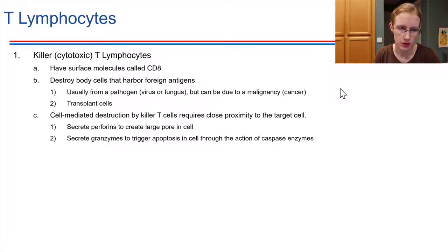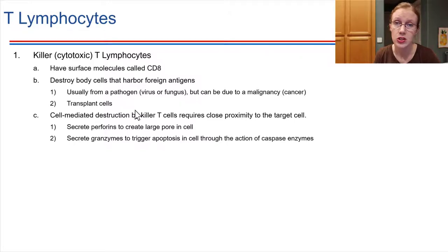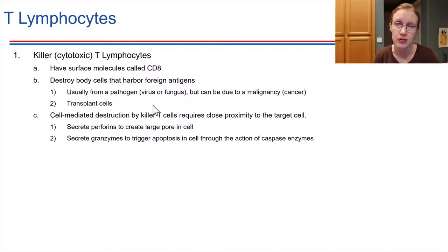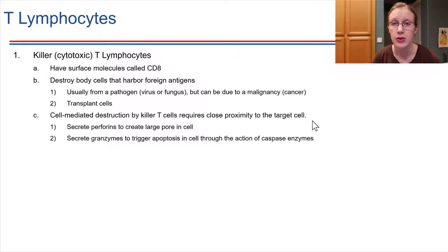Cytotoxic T cells are also the ones that sometimes overreact to transplanted tissues. So transplants from one person into another sometimes lead to immune rejection, and that's due to the activity of the cytotoxic T cells. T lymphocytes have to be close to their target in order to do their job — they can't act at a distance.